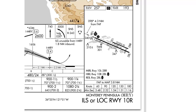The first thing you'll see in the airport sketch is the runway alignment. In this case, you have two parallel runways: runway 10 right/28 left, and runway 10 left/28 right. Accompanying each runway name is the dimensions of the runway. Runway 10 left/28 right is 3,513 feet long and 60 feet wide. Runway 10 right/28 left is 7,616 feet long and 150 feet wide.